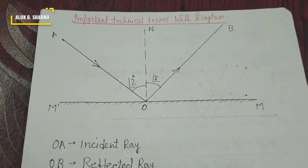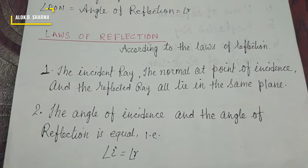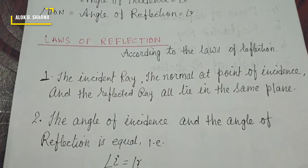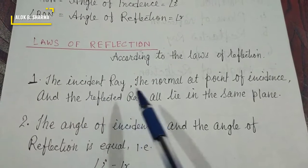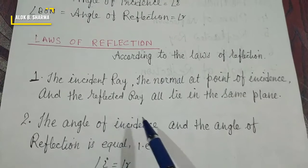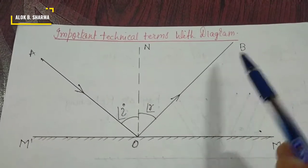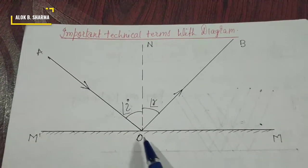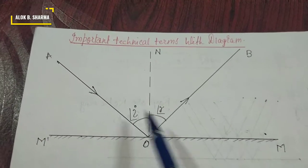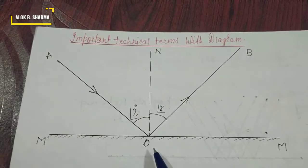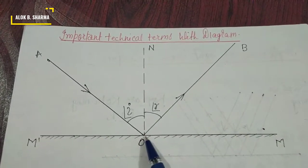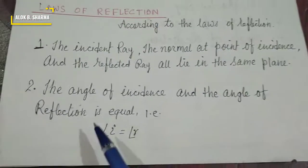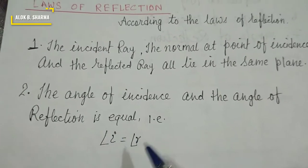Now, what are the laws of reflection? There are two laws. The first law states that the incident ray, the normal at the point of incidence, and the reflected ray all lie in the same plane — the plane of reflection.